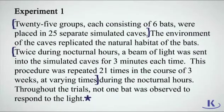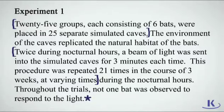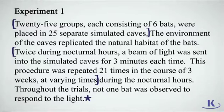Let's identify the variables in the passage we mapped in the previous lesson. Experiment 1: 25 groups, each consisting of 6 bats, were placed in 25 separate simulated caves. The environment of the caves replicated the natural habitat of the bats. Twice during nocturnal hours, a beam of light was sent into the simulated caves for 3 minutes each time. This procedure was repeated 21 times over 3 weeks, at varying times during the nocturnal hours. Throughout the trials, not one bat was observed to respond to the light.